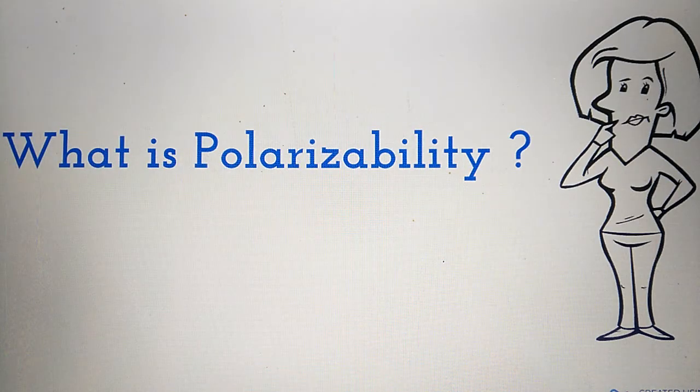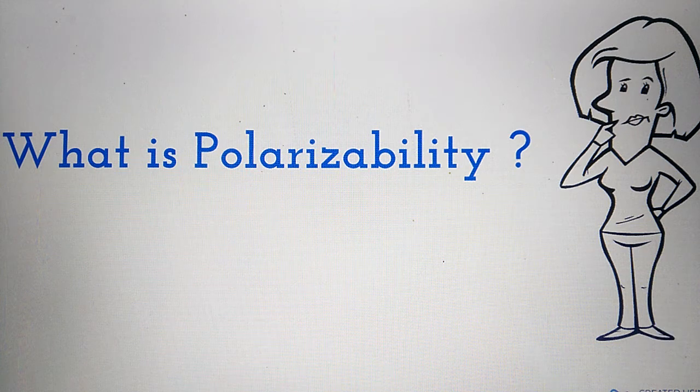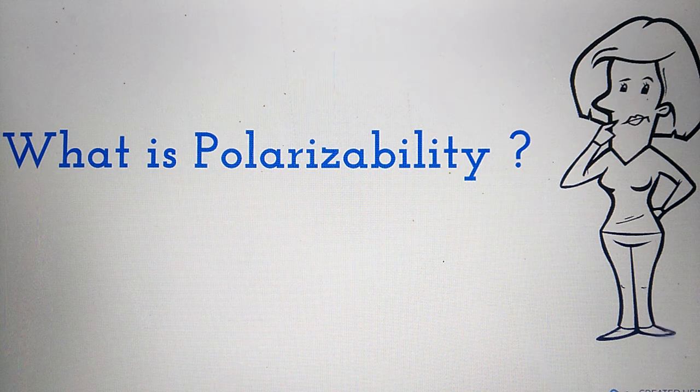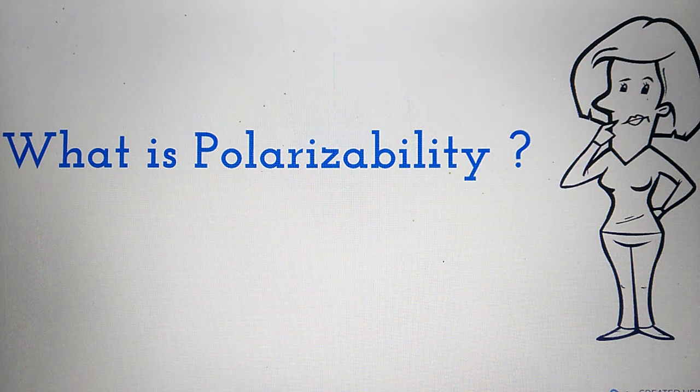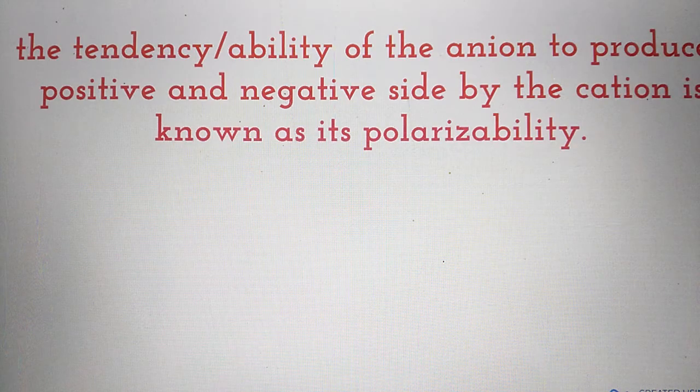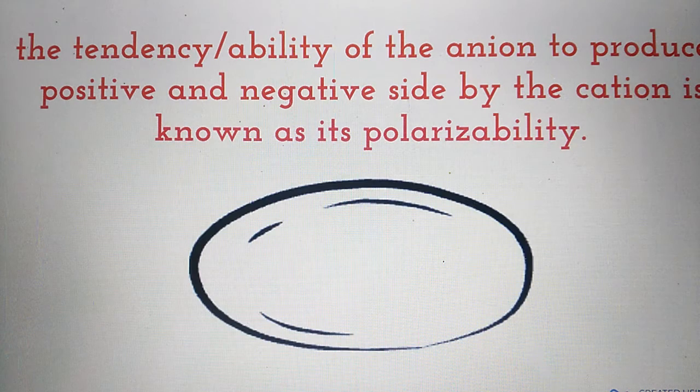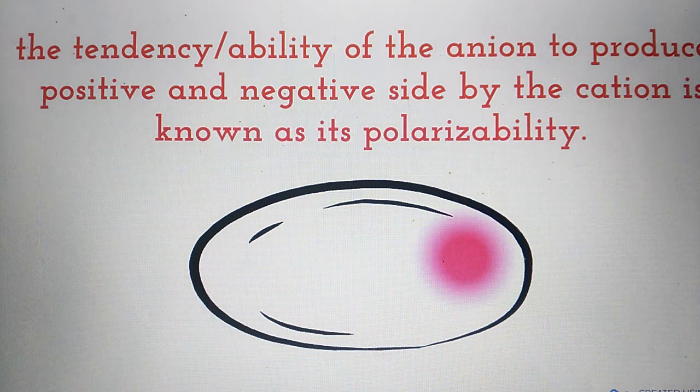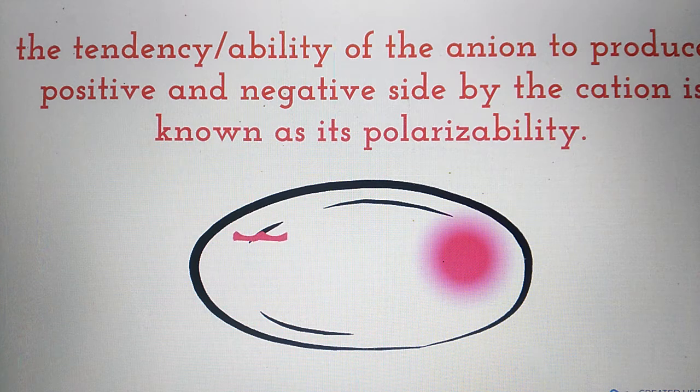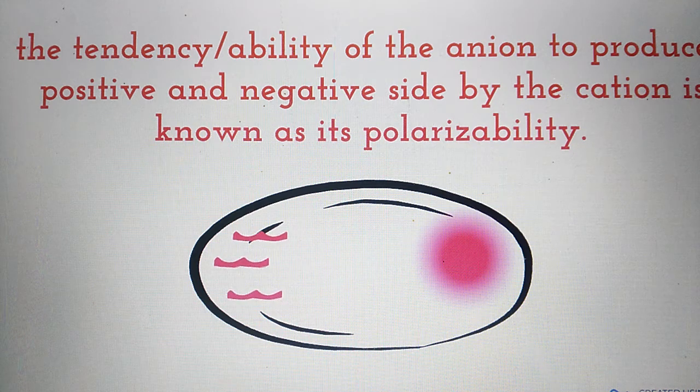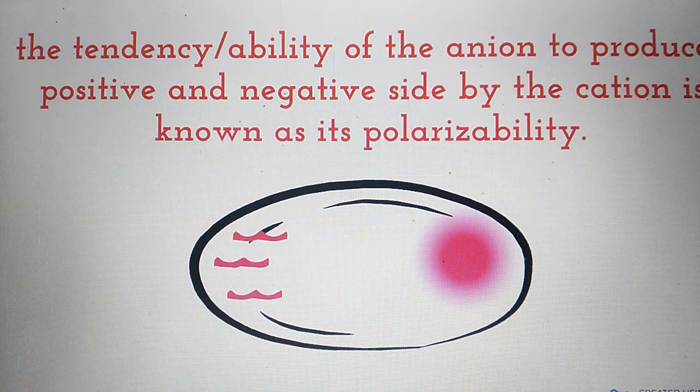What is polarizability? The tendency or ability of an anion to produce positive and negative sides by the cation is known as its polarizability.